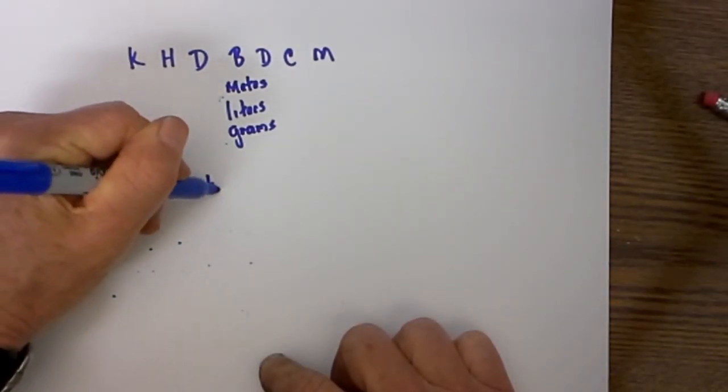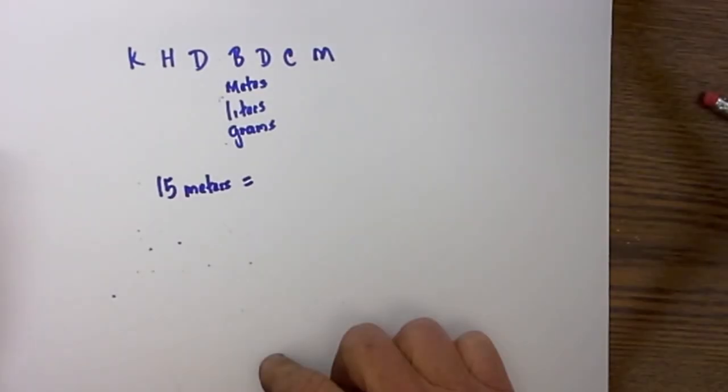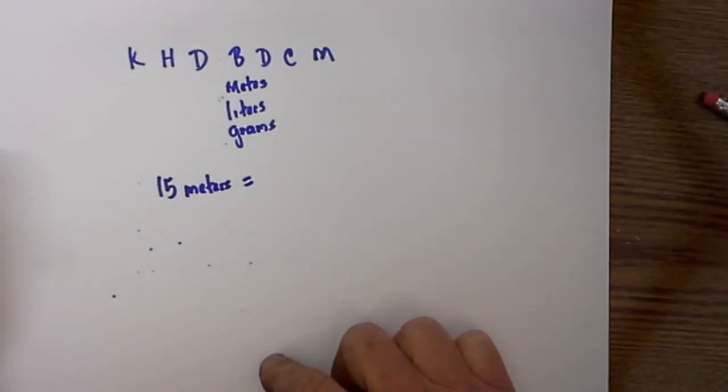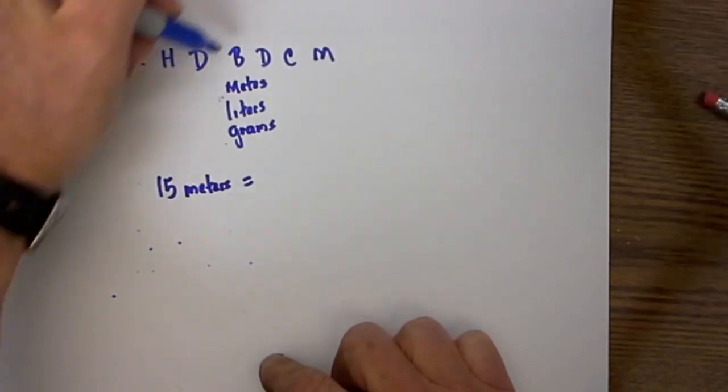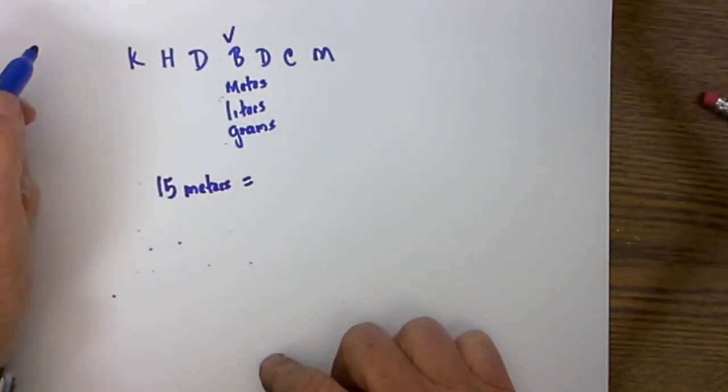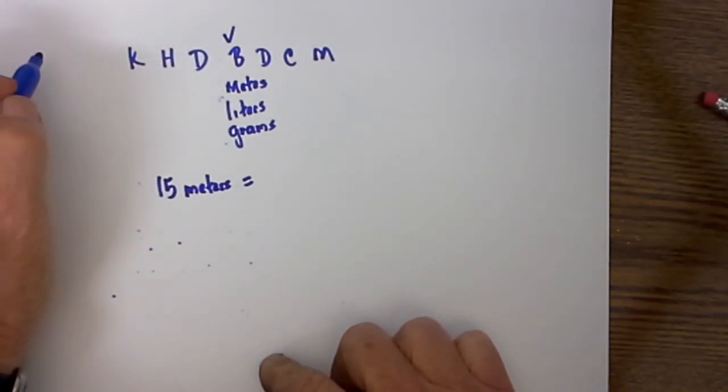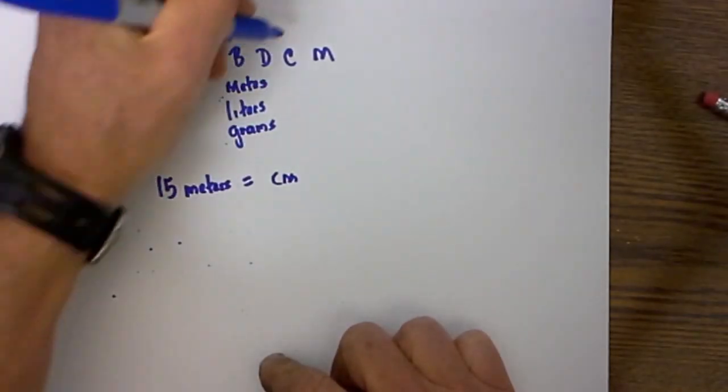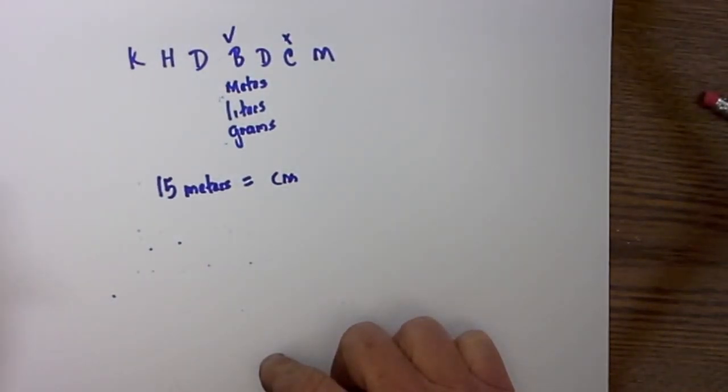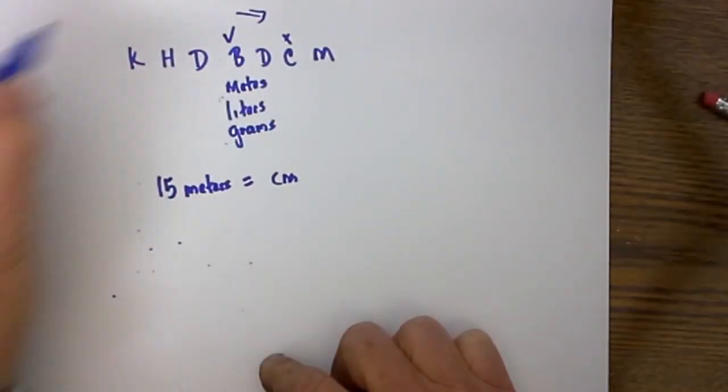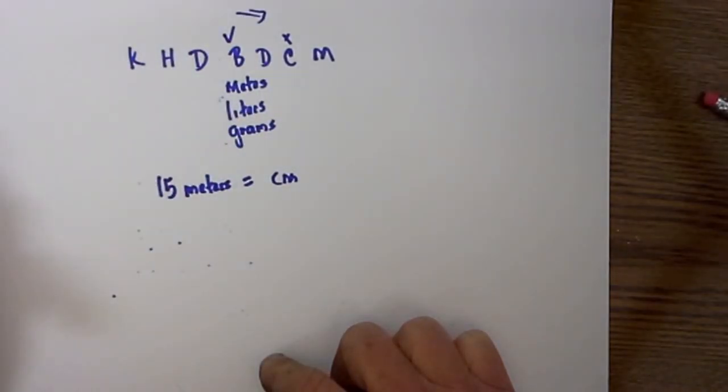Let's say 15 meters equals how many centimeters. An easy way to put a check mark on where I am starting. I am starting at meters and I put an x, x marks the spot where I am going to. I am going to centimeters so I will put an x, it marks the spot, and then if you would like you can put an arrow in the direction you are going.